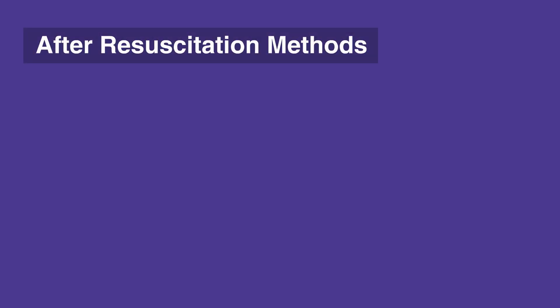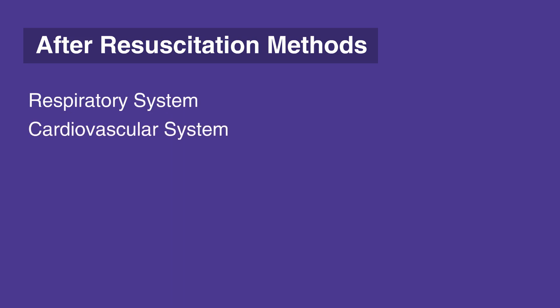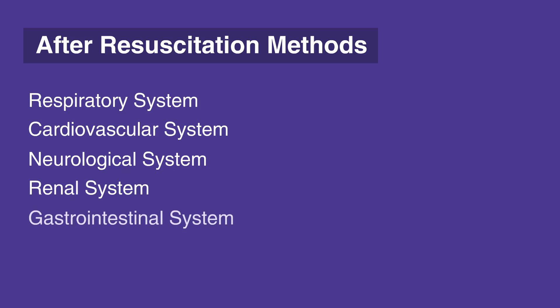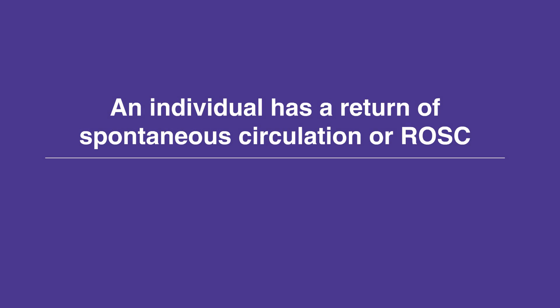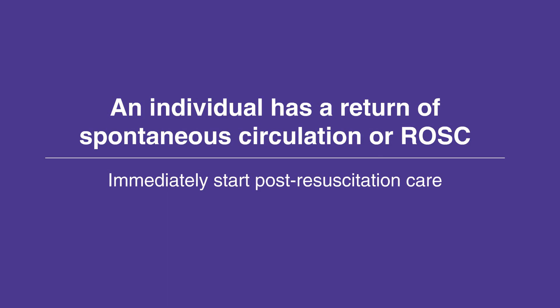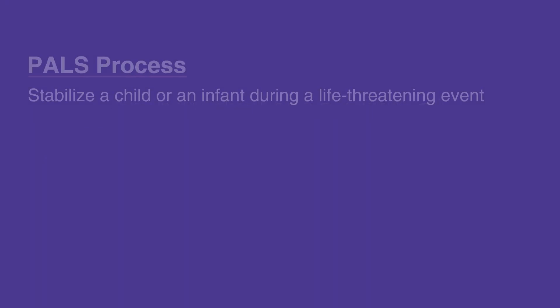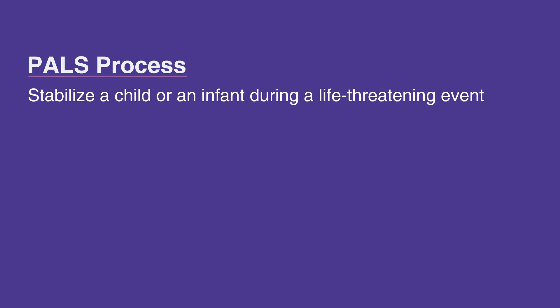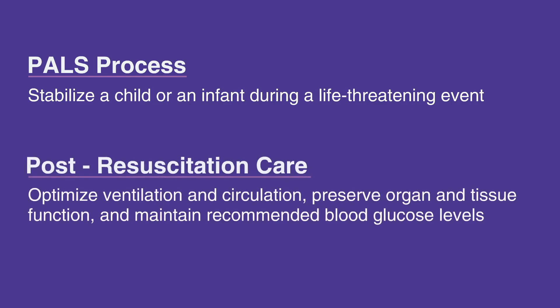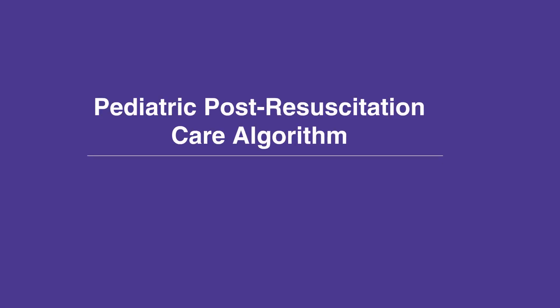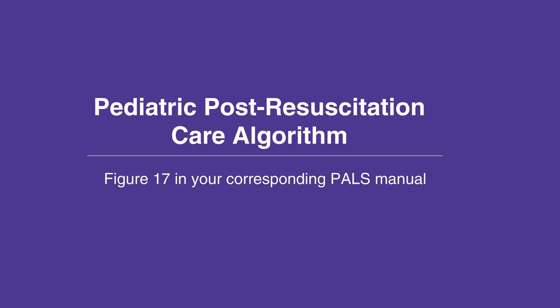In this video, we will discuss what to do after resuscitation — methods to care for the individual's respiratory system, cardiovascular system, neurological system, renal system, gastrointestinal system, and hematological system. If an individual has a return of spontaneous circulation, or ROSC, start post-resuscitation care immediately. The initial PALS process is intended to stabilize a child or infant during a life-threatening event. Post-resuscitation care is meant to optimize ventilation and circulation, preserve organ and tissue function, and maintain recommended blood glucose levels. For the pediatric post-resuscitation care algorithm, refer to Figure 17 in your corresponding PALS manual.